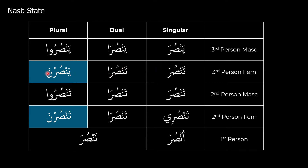The exception to the rule where the noon is dropped when in the nasib state is for the third person feminine plural and the second person feminine plural — both female plurals remain the exact same, and their state will only be known through context. Continuing on: tensura, tensura, tensuru, tensuri — before it used to be tensurina, but now the noon is dropped to show it's in a state of nasb. Then tensura, tensurna — this one remains the same. Ansura from ansuru, and nansura from nansuru. That's essentially the nasb state of the fi'il-mudari.